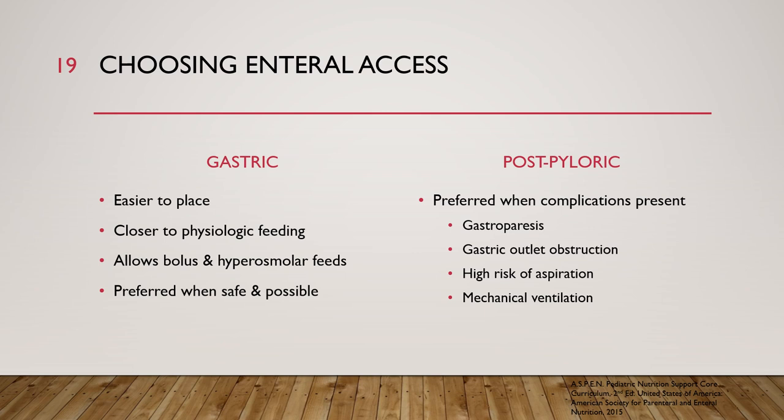Once enteral feeding is decided, we choose between gastric or post-pyloric access. Gastric feeds are easier to place, more physiologic, and allow bolus or hyperosmolar feeds since food goes into the stomach. This is usually preferred when gastric access is safe. Post-pyloric access is used only when complications are present, such as gastroparesis, gastric outlet obstruction, higher aspiration risk, or when the patient is on mechanical ventilation.